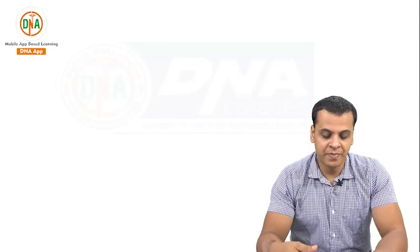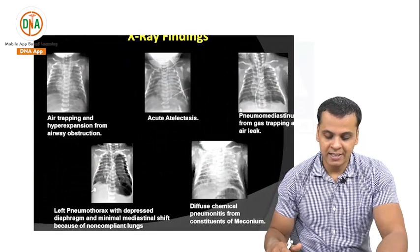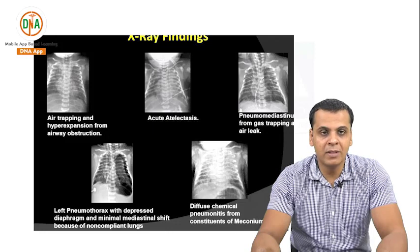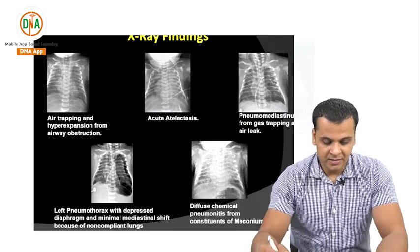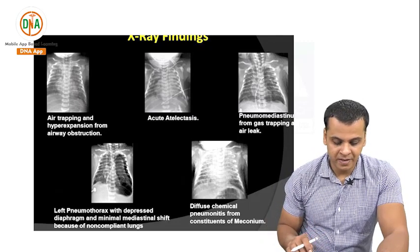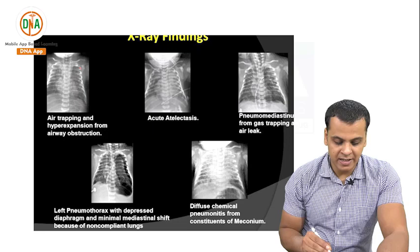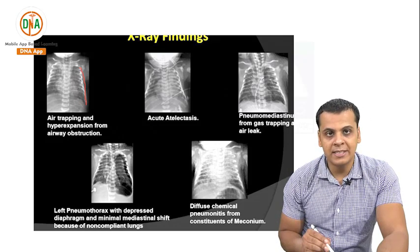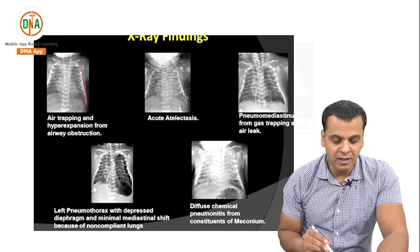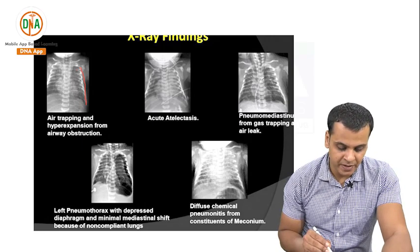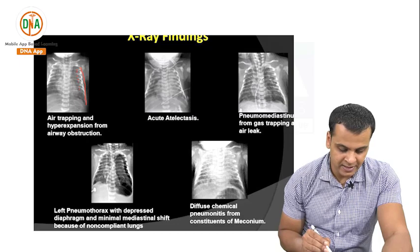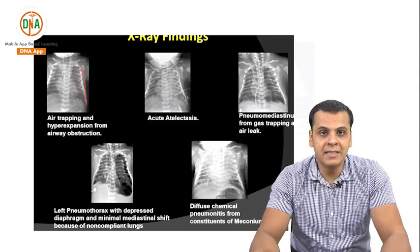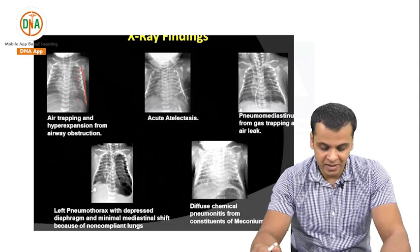We are going to start our image-based discussion now. Let us look at this first image. These are the X-ray findings of a common neonatal condition. In this first X-ray, you can clearly see hyperexpansion. Hyperexpansion is identified by counting the number of intercostal spaces: 1, 2, 3, 4, 5, 6, 7, 8, and 9. If there are more than 8 spaces, then by definition it is hyperexpansion.